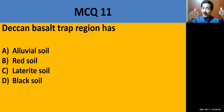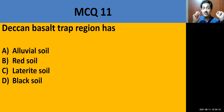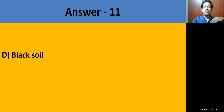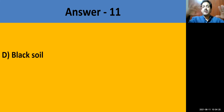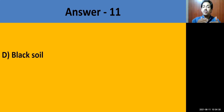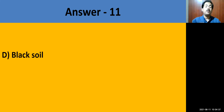MCQ question number 11: Deccan Basalt Trap region has which soil? Options: alluvial soil, red soil, laterite soil, or black soil. The correct answer is black soil. In the Deccan Basalt Trap, long ago due to volcanic eruption a large area was covered with lava. This lava became solid rocks over time, and the disintegration and weathering of these black rocks led to the formation of black soil.